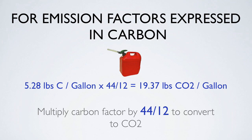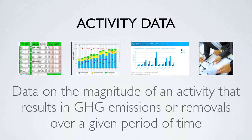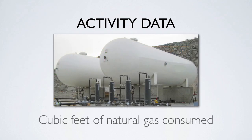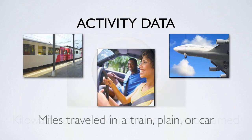Emission factors are used to estimate greenhouse gas emissions based on activity data. Activity data is defined as data on the magnitude of an activity that results in greenhouse gas emissions or removals over a period of time. Basically, activity data quantifies an activity such as energy use or employees' business trips. Activity data can be expressed in many different units, in both metric and English — for example, cubic feet of natural gas consumed, kilowatt-hours of electricity consumed, miles traveled by train, plane, or car, or the conversion of limestone into cement.